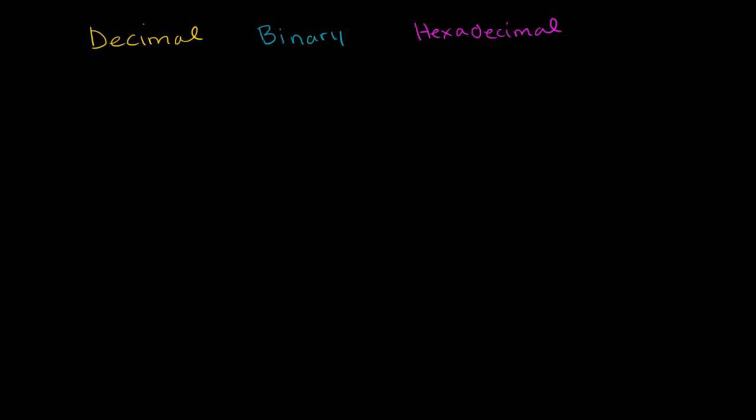What I want to do in this video is just a little bit of practice converting between the different number systems. So let's just start with a decimal number, literally just the number 31, and let's see if we can represent that in binary and hexadecimal.